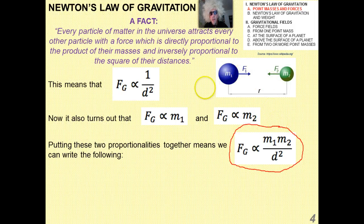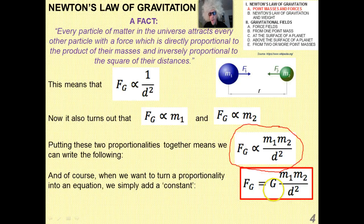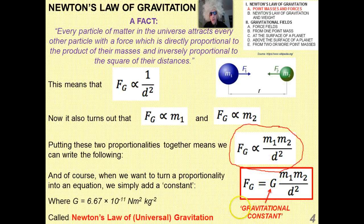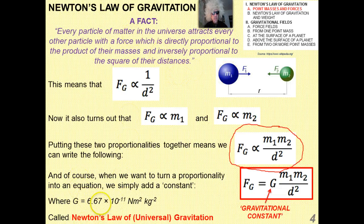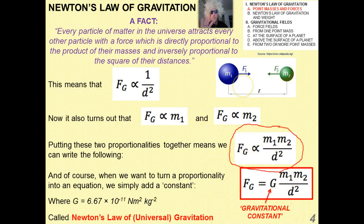To make a proportionality into an equals sign, we add a constant. That constant is called the gravitational constant G, used in Newton's Law of Universal Gravitation. G is 6.67 times 10 to the minus 11, with units of Newton meters squared over kilograms squared. This equation — F equals G times M1 times M2 over D squared — is Newton's Law of Universal Gravitation, and it's super important.